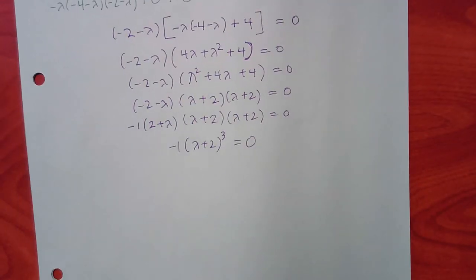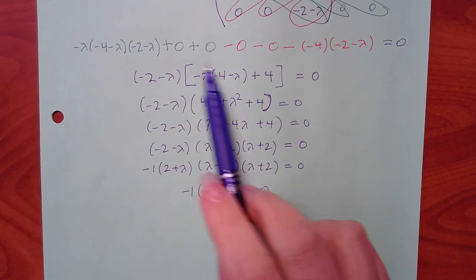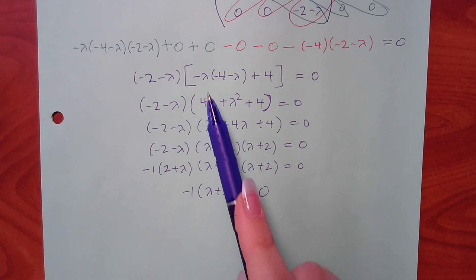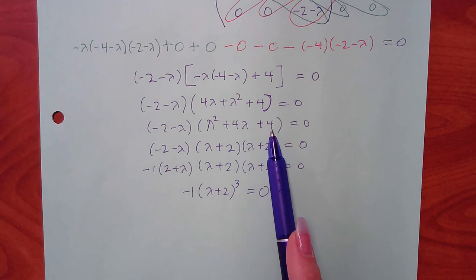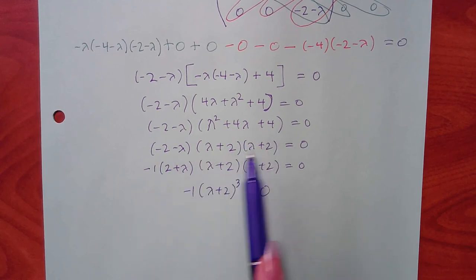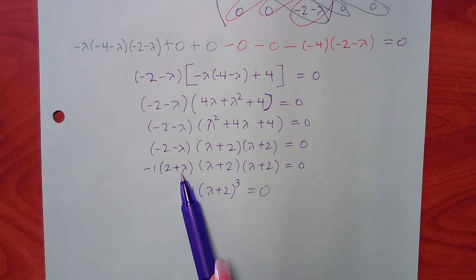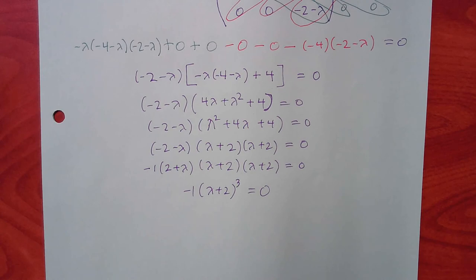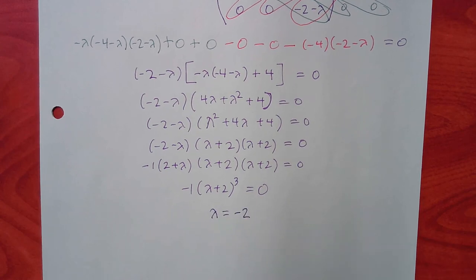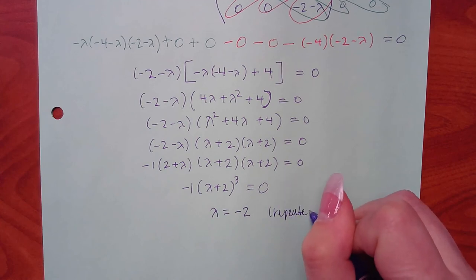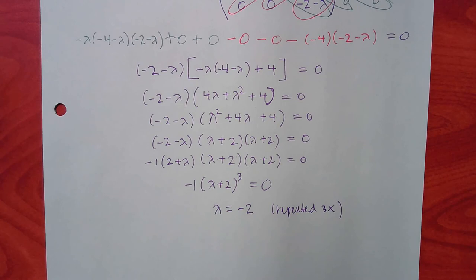We only get one distinct lambda: negative 2. Right now we don't care that it's repeated three times — we only need to find K vectors. But here's the twist: we're going to get more than one eigenvector from this single lambda.